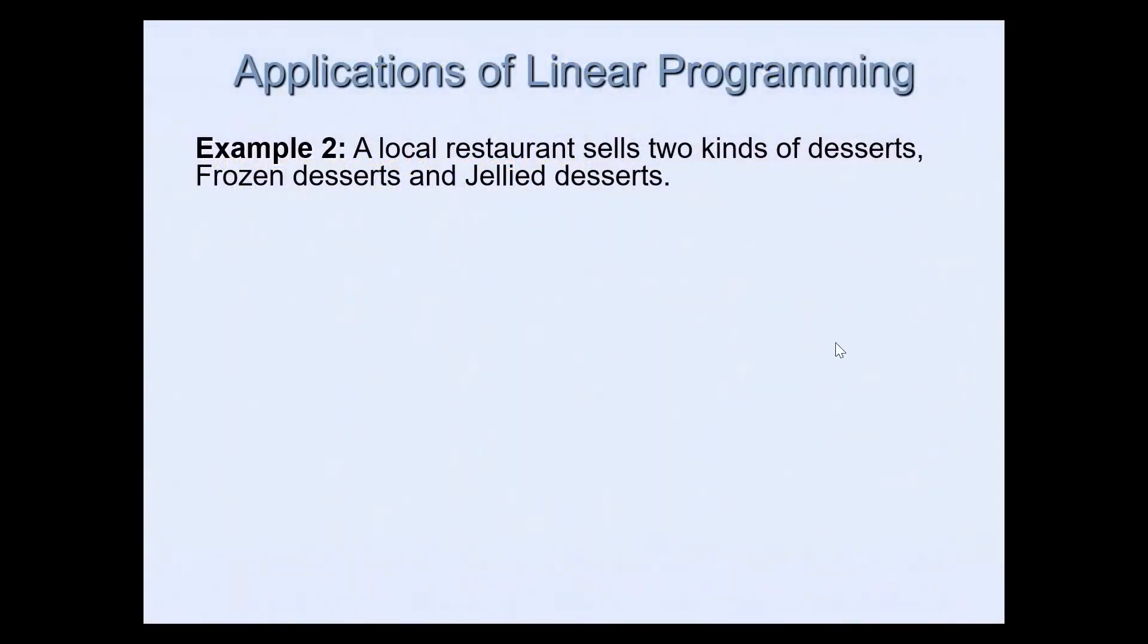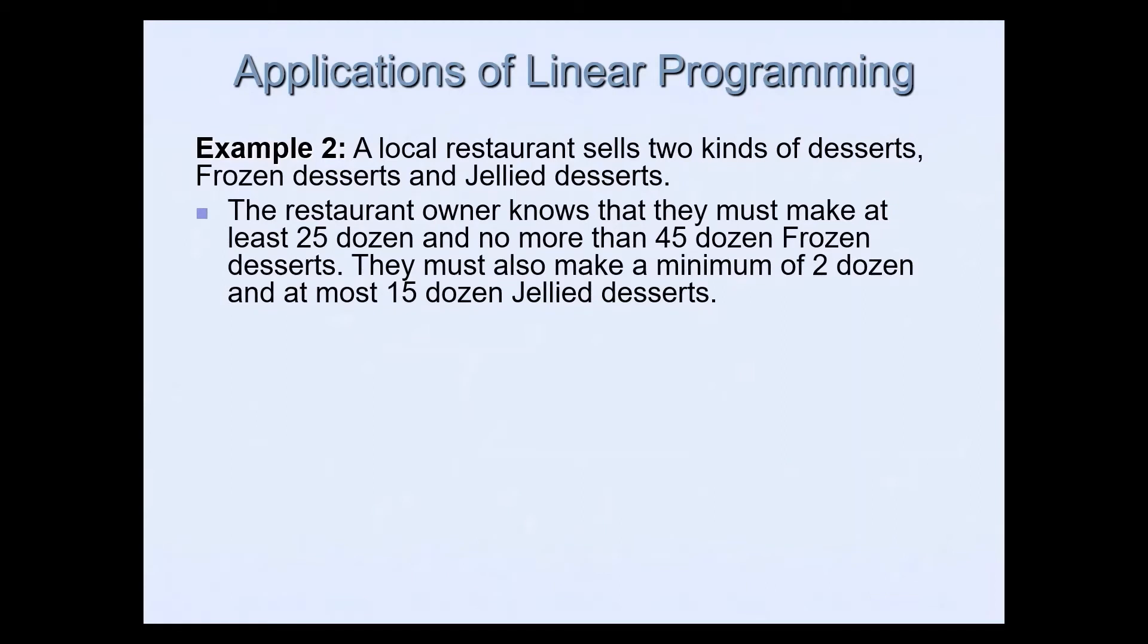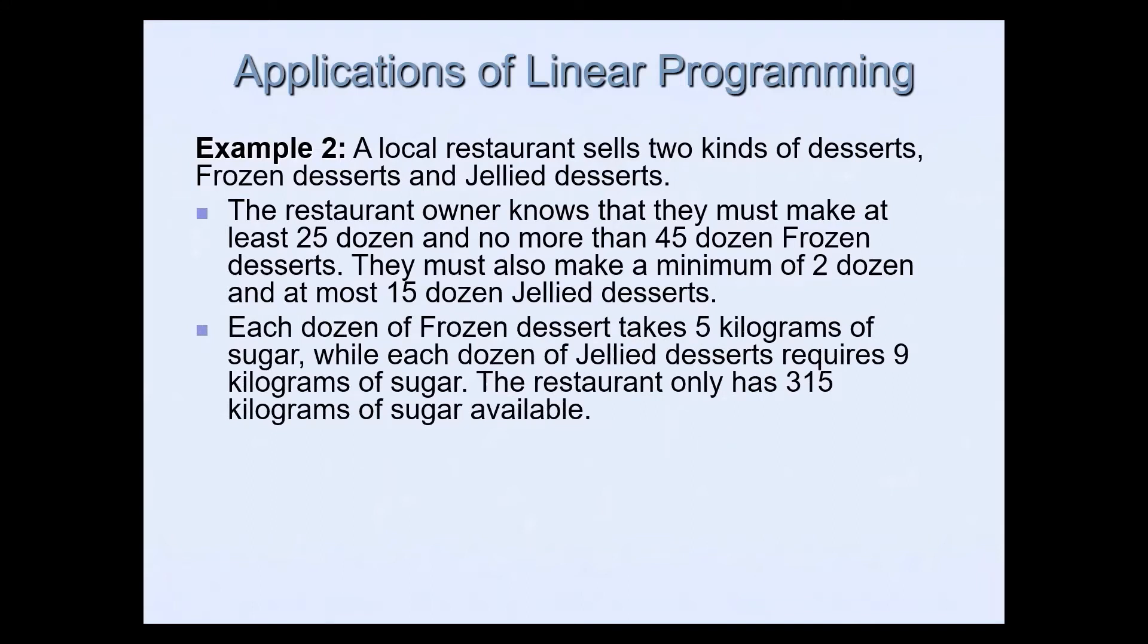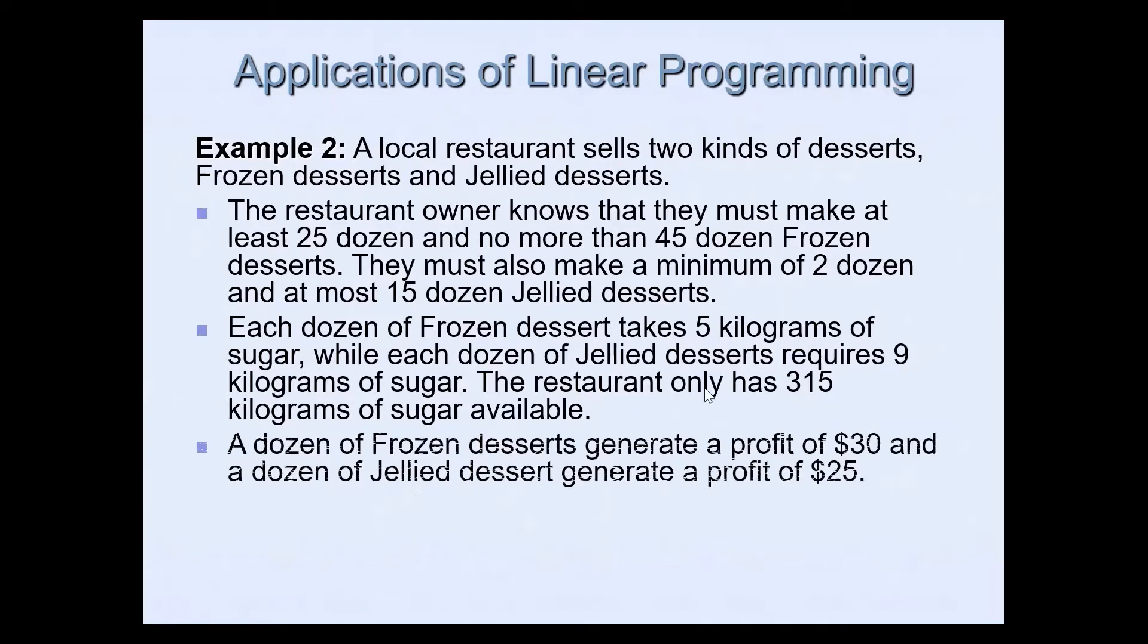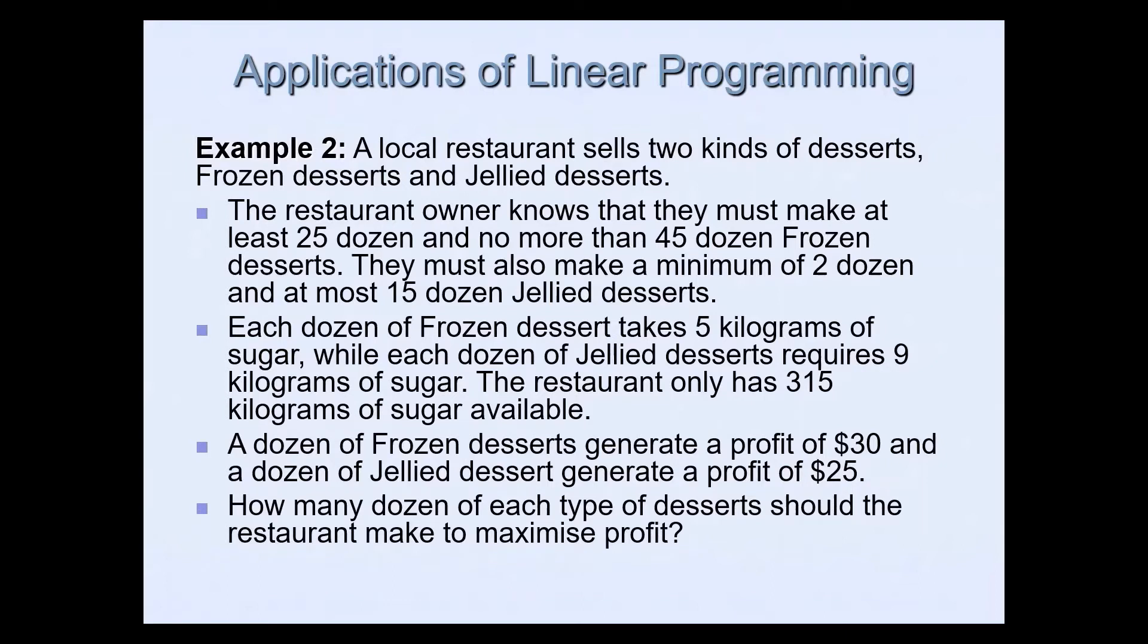So second example: a local restaurant sells two kinds of desserts, frozen desserts and jellied desserts. The restaurant owner knows that they must make at least 25 dozen and no more than 45 dozen frozen desserts. They must also make a minimum of 2 dozen and at most 15 dozen jellied desserts. Each dozen of frozen dessert takes 5 kilograms of sugar while each dozen of jellied desserts requires 9 kilograms of sugar. The restaurant only has 315 kilograms of sugar available. A dozen of frozen desserts generate a profit of $30 and a dozen of jellied desserts generate a profit of $25. How many dozen of each type of dessert should the restaurant make to maximize profit?